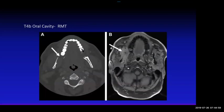Another T4B: a retromolar trigone cancer on the right that has obviously eroded the mandible. MRI really shows involvement of the masticator space better — you could almost miss that on CT. For bony involvement I like CT, but for soft tissue extension I prefer MRI — it shows more extent of involvement.